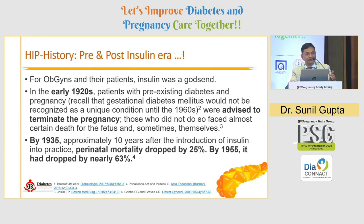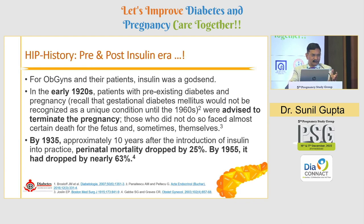Before 1920, before the discovery of insulin, most pregnancies — whether pre-gestational or gestational diabetes — used to be terminated. If you had pre-existing type 1 or type 2 diabetes, it was considered unlikely for you to have a pregnancy, and termination was advised. By 1935, almost 10 years from the introduction of insulin, the perinatal mortality had dropped to 25% and then almost 63%.